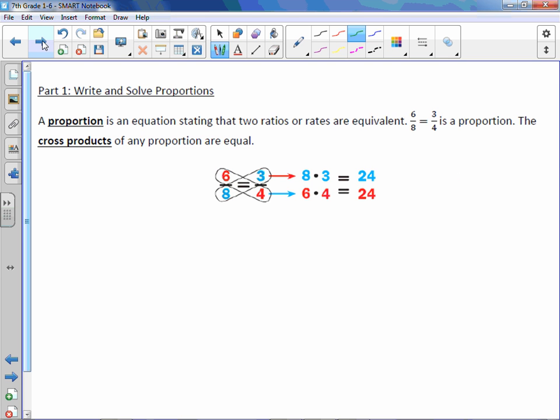A proportion is an equation stating that two ratios or rates are equivalent. For example, 6 over 8 is equal to 3 over 4. That's a proportion. Cross products of any proportion are equal. So a cross product means you multiply diagonally across the equal sign. So 8 times 3 is 24 and 6 times 4 is 24.